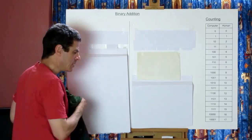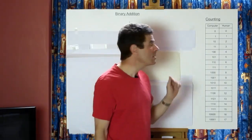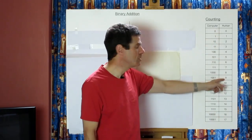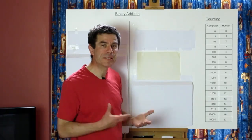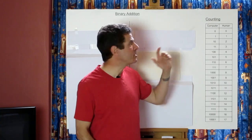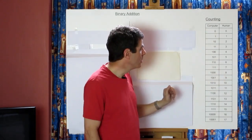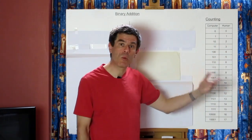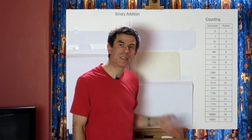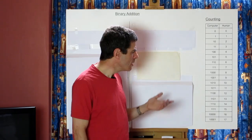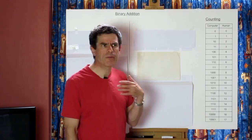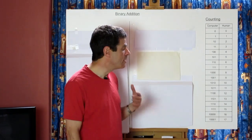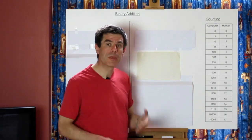So the first thing to think about is counting. As humans we count like this: we have 10 digits, 0 to 9. Because we have 10 digits it's a base 10 system, or decimal. With 10 digits we can count up to 9. If we want to count to more than 9 we add another column. Our first column on the right-hand side is our ones column, and we add a tens column — it's a tens column because it's base 10. That will get us up to 99.